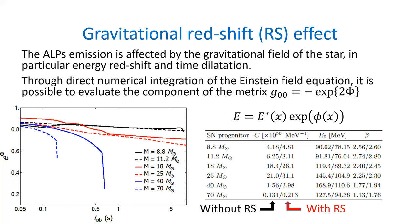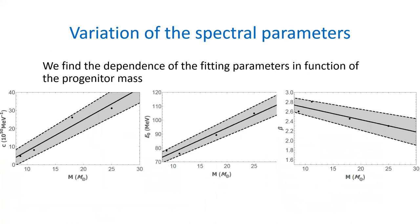We then tried to extrapolate some kind of trend for the fit parameters of the energy spectrum. With four different successful core collapse supernova models, we can evaluate a linear behavior for the fit parameters. On the other hand, with only two failed core collapse supernova models from two different types of simulations, we did not attempt to extrapolate a general behavior for them — this could be done with more models in the future.